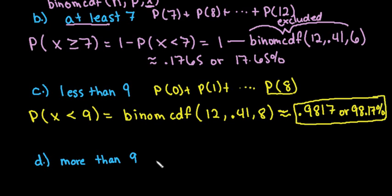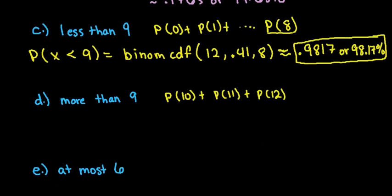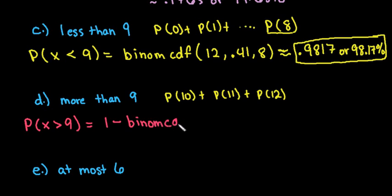More than 9 means strictly greater than 9, so it does not include 9 — we only want P(10) + P(11) + P(12). Since it's greater than, we do 1 minus binomCDF. We use x = 9, because 9 is the last value we want to exclude; it is not more than 9, it's equal to 9.